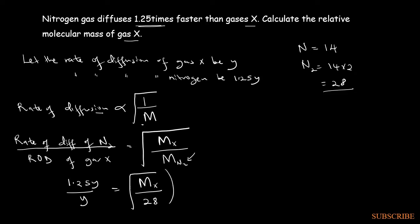So if we are to square both sides to remove the square root, our y's will cancel. We shall be left with 1.25 squared will be equal to molecular mass of X over 28. That gives us molecular mass of X being equal to 1.25 squared times 28.